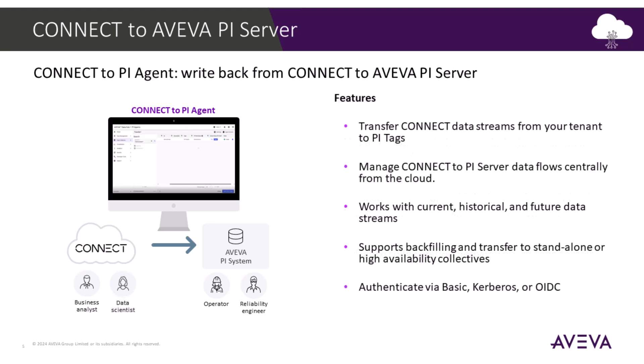Here are some features to look forward to with the first release of Connect to PI. The Connect to PI agent runs on a local machine and allows you to configure transfers, which define what data will be sent to the PI Data Archive from Connect. These transfers are created and managed from Connect Data Services centrally in the cloud. Current, historical, and future data streams are all supported.